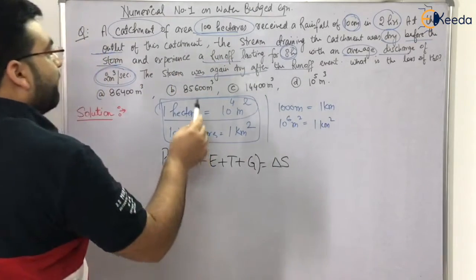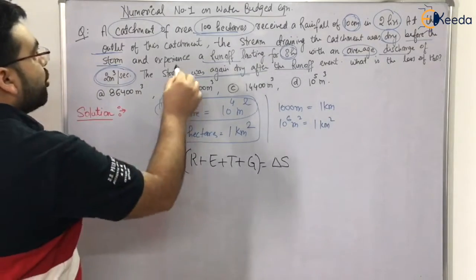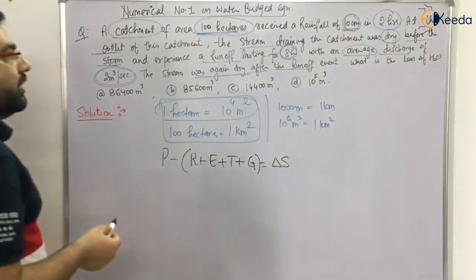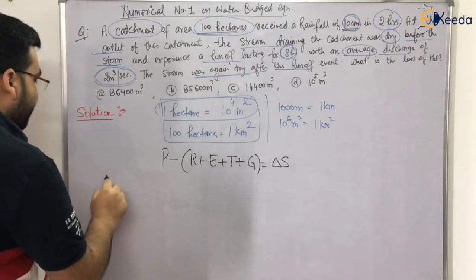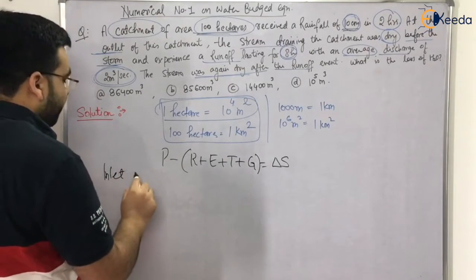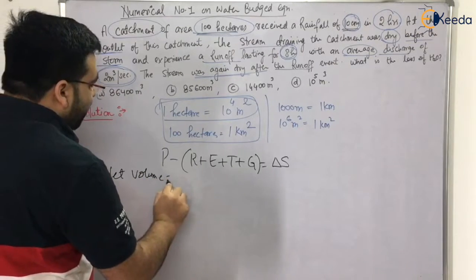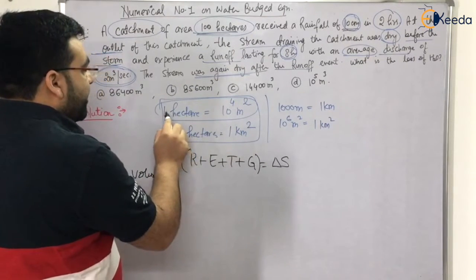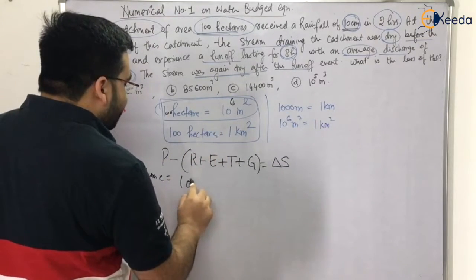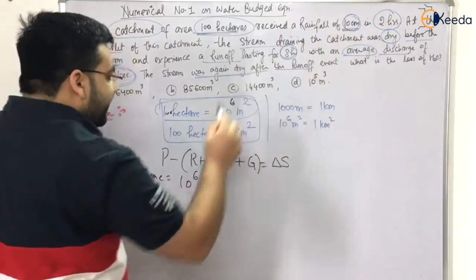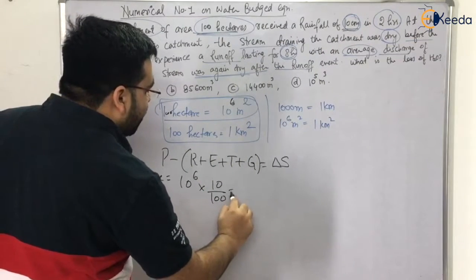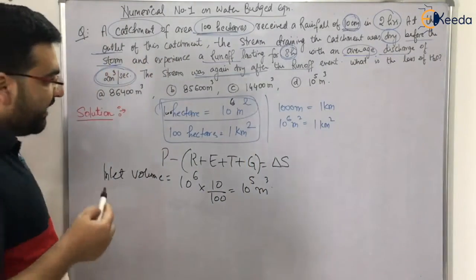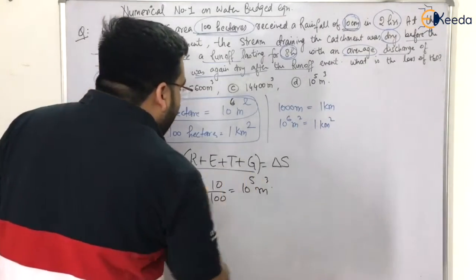The inflow is the precipitation over the catchment. Inflow volume = 100 hectares × 10⁴ m²/hectare = 10⁶ m². Multiplying by 10 cm (= 0.1 m) of rainfall gives an inflow volume of 10⁵ m³.